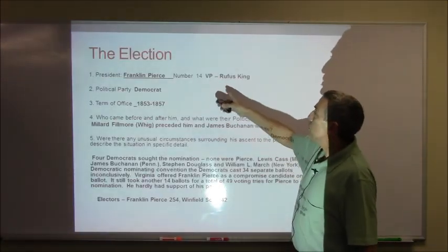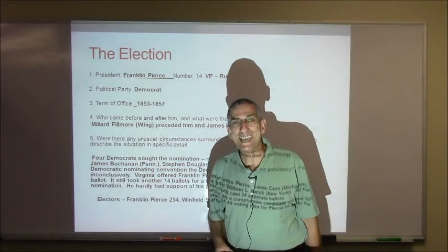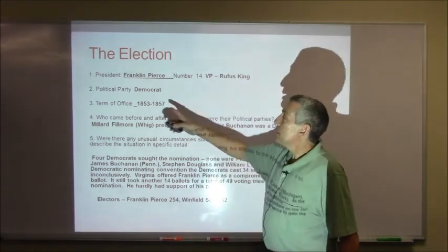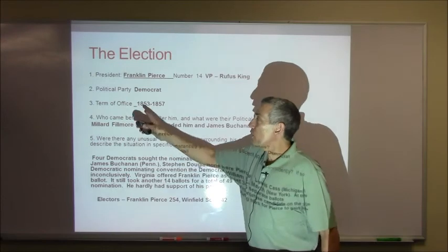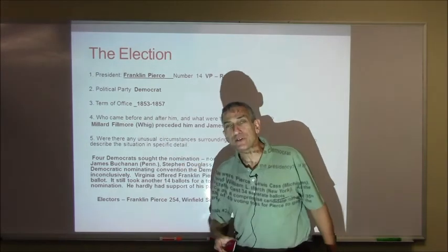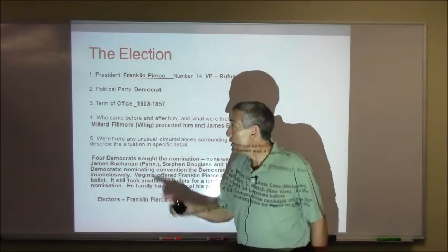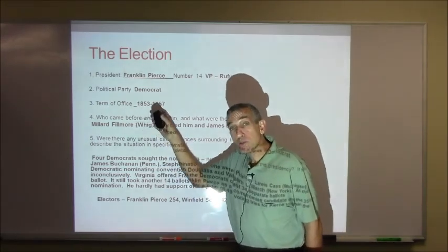Franklin Pierce, number fourteen. His Vice President was Rufus King. Political party is Democrat. His term of office, 1853 to 1857 — so again, a one-term President.